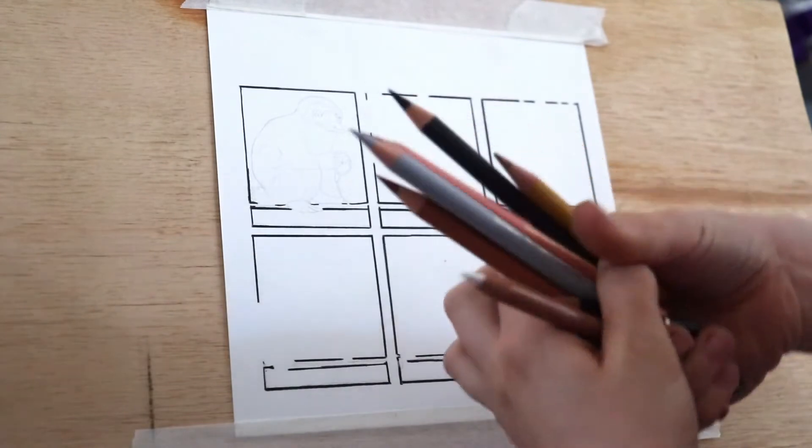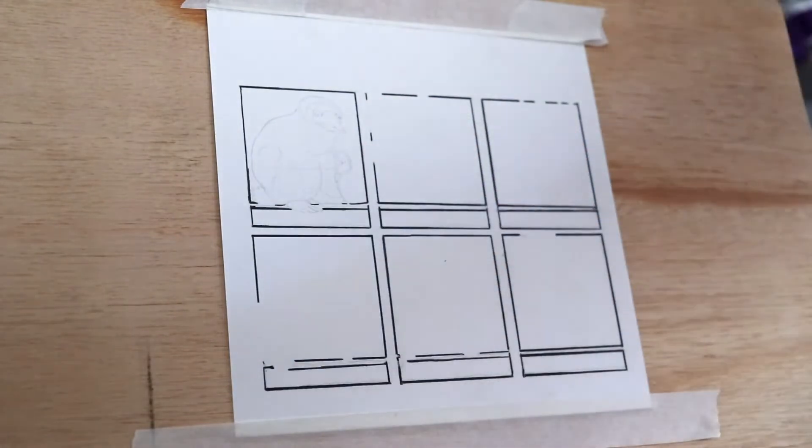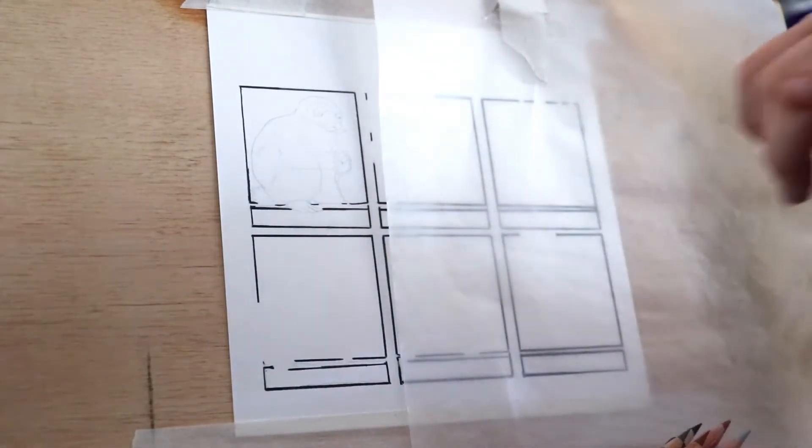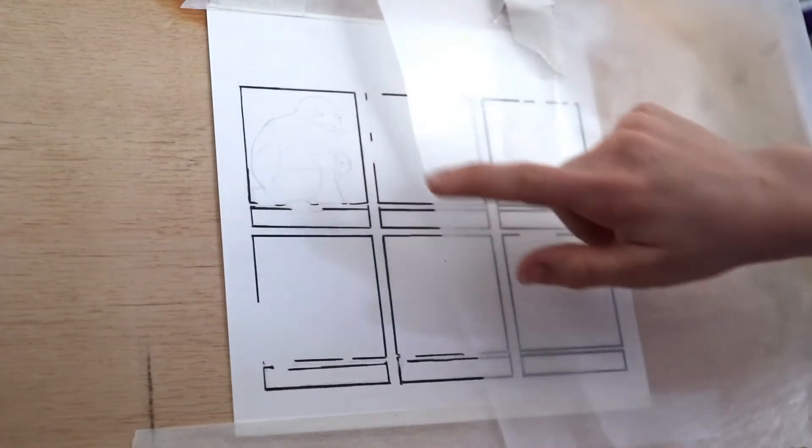The only other thing I'll be using is my glassine to stop my hand from smudging all the lovely black lines as I'm drawing, and the paper I'll be using today is Stonehenge. Yeah, let's get started.